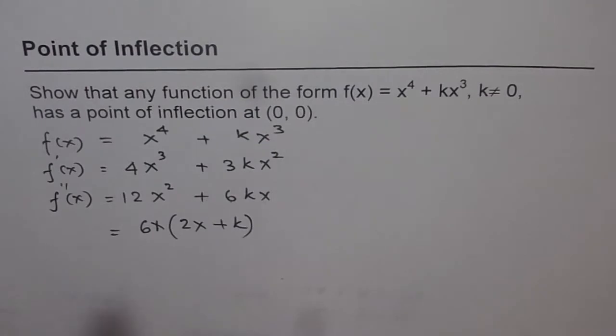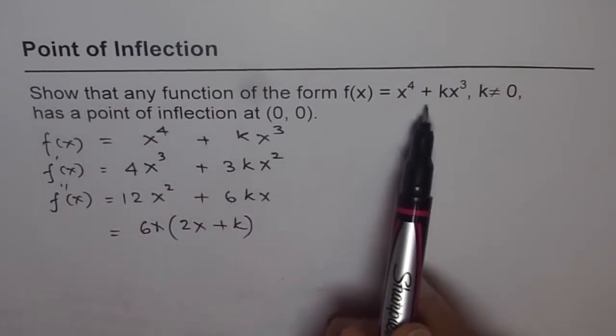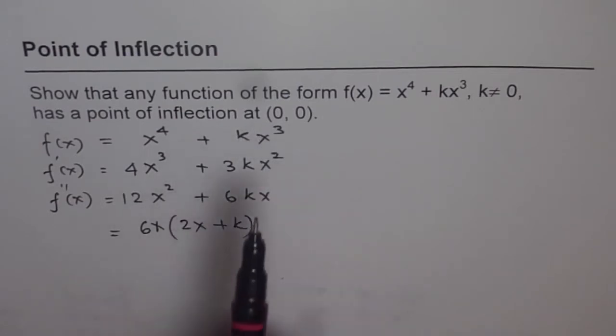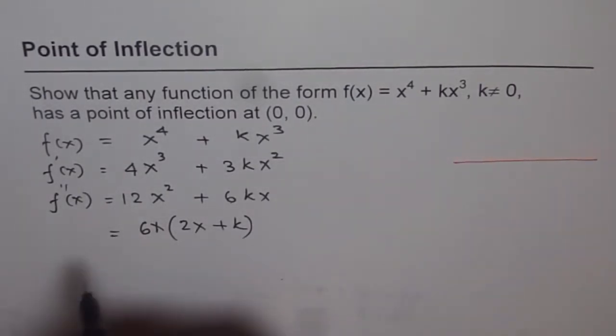Well, that gives us 2 zeros and not just 1. Anyway, let's read it once again. It says show that any function of this form has a point of inflection at (0, 0). That means at least at (0, 0) it should have point of inflection, it could have point of inflection at some other point also. It's not saying only at, right? So it makes sense.